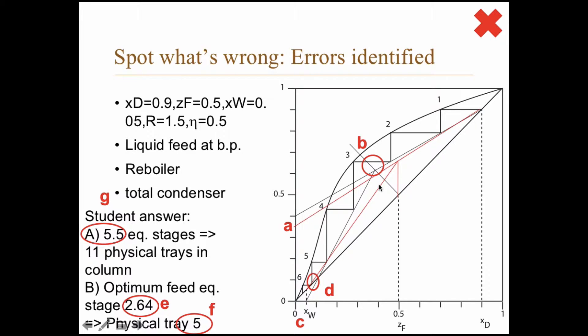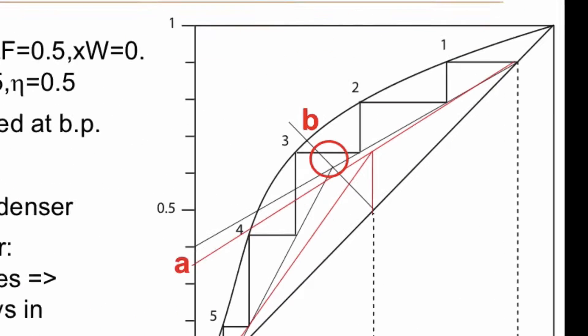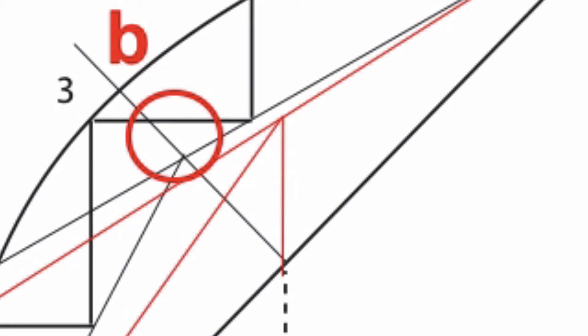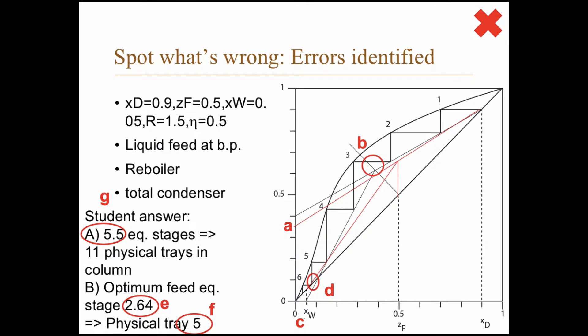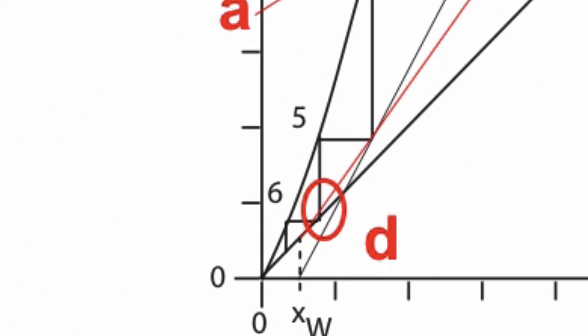b: the thing that's wrong there is that the q-line is wrong. It is a liquid feed at its boiling point and that should be a vertical line. c: the lower operating line should intersect the diagonal in the point xw, but in this case the student has drawn the lower operating line down here and that's simply wrong.